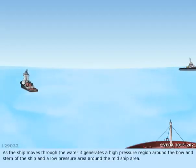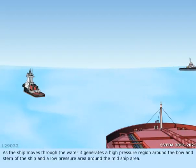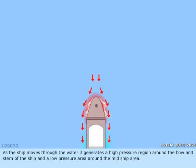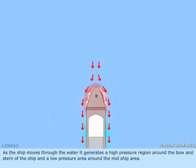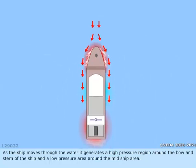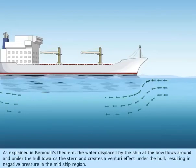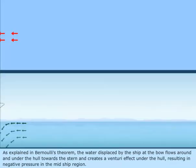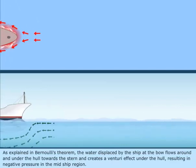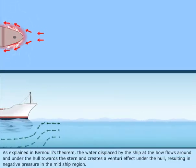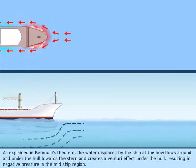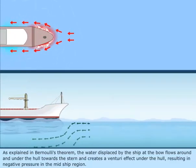As the ship moves through the water, it generates a high pressure region around the bow and stern of the ship and a low pressure area around the midship area. As explained in Bernoulli's theorem, the water displaced by the ship at the bow flows around and under the hull towards the stern and creates a venturi effect under the hull, resulting in negative pressure in the midship region.